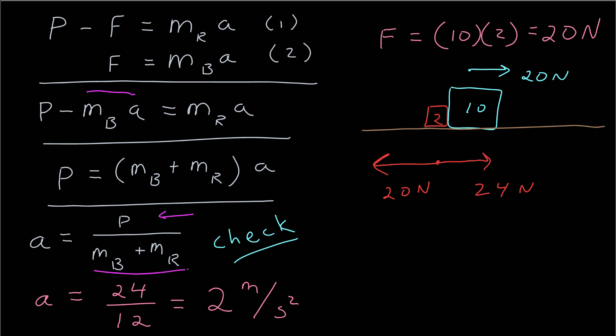To verify, let's look at the red block. By Newton's third law, there's a 20-newton force to the left on the red block. Combined with the 24-newton push to the right, the net force is 4 newtons on the 2-kilogram red block, giving a 2 meters per second squared acceleration — consistent with our answer. This is a powerful problem. Working through it carefully helps you understand how to apply Newton's third law to describe interactions between objects, and Newton's second law to analyze each individual object. Try solving it from scratch on a blank sheet of paper.